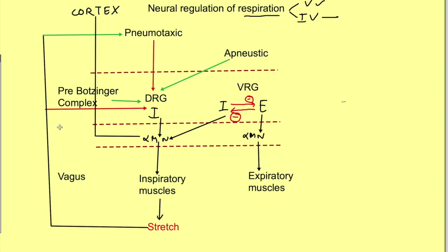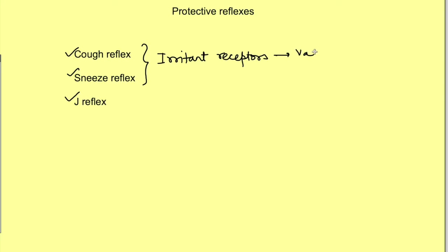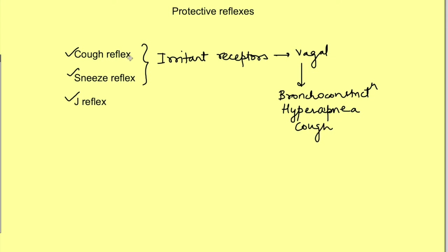Apart from control via neural centers, there are protective reflexes: the cough reflex, sneeze reflex, and J reflex. The cough and sneeze reflexes occur because of irritant receptors in the larynx, trachea, and bronchi. When an irritant stimulates these receptors, vagal afferents go to the neural centers, resulting in bronchoconstriction, hyperpnea, and cough. The sneeze reflex similarly expels irritants from the body.